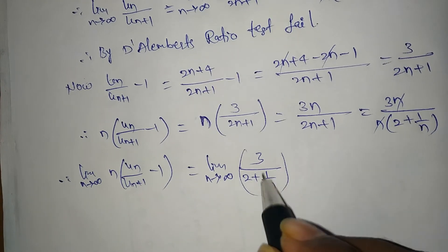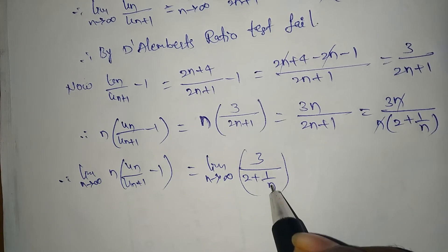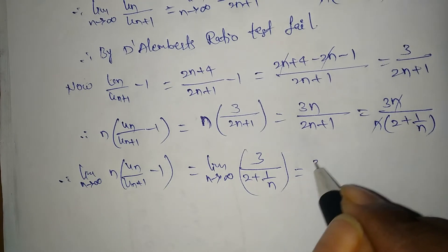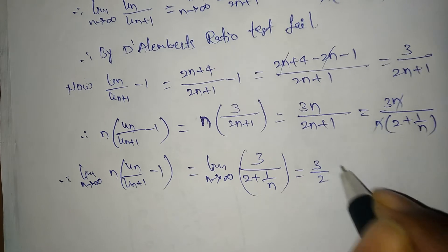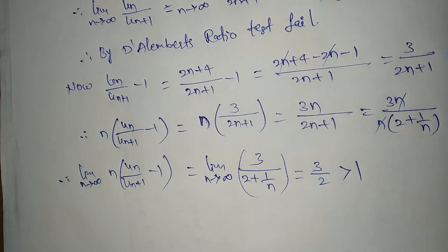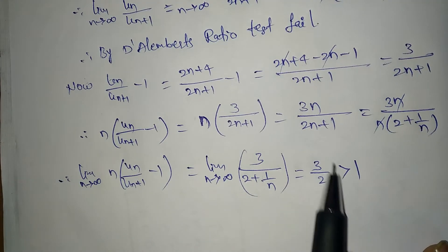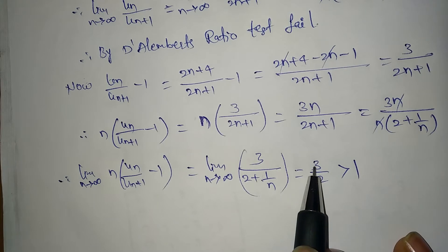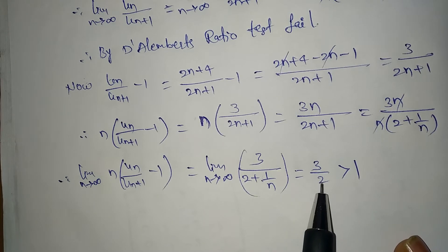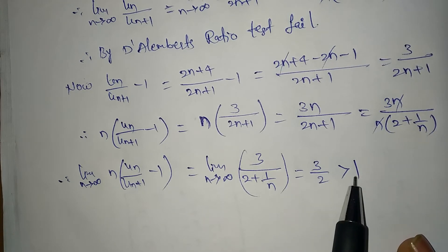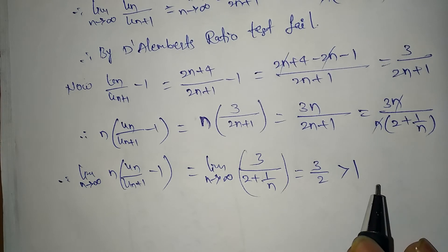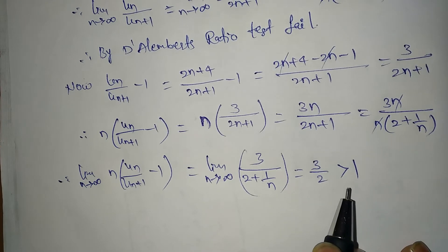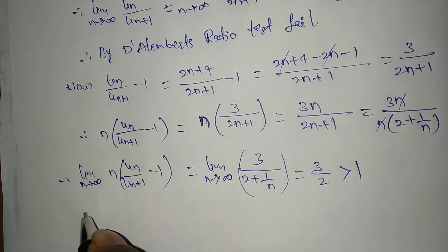As n→∞ the term 1/n → 0, so the limit equals 3/2. Since L = 3/2 which is greater than 1, and the condition L greater than 1 gives convergence, therefore by Raabe's test the series is convergent.